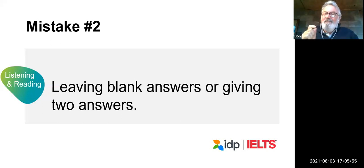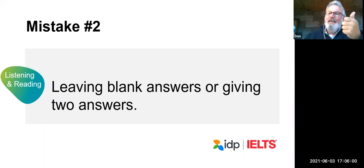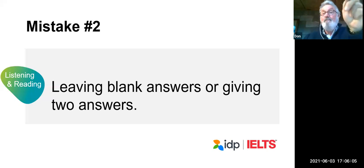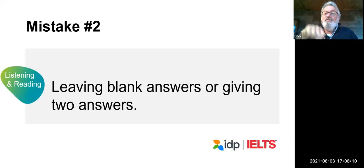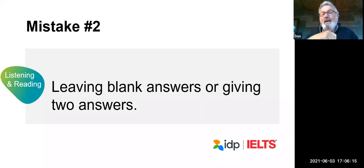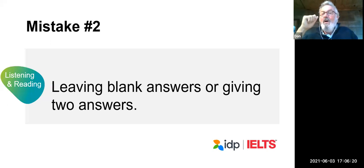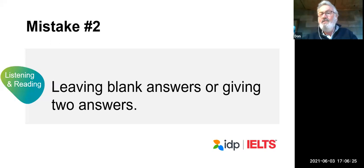The other thing some people do is think it could be A or it could be B, and they write down both A and B. Well, maybe the answer is A, but because you wrote both A and B, both are marked as wrong. If you are asked for only one answer, only give one answer. Because if you give two, neither of them will be marked correct.